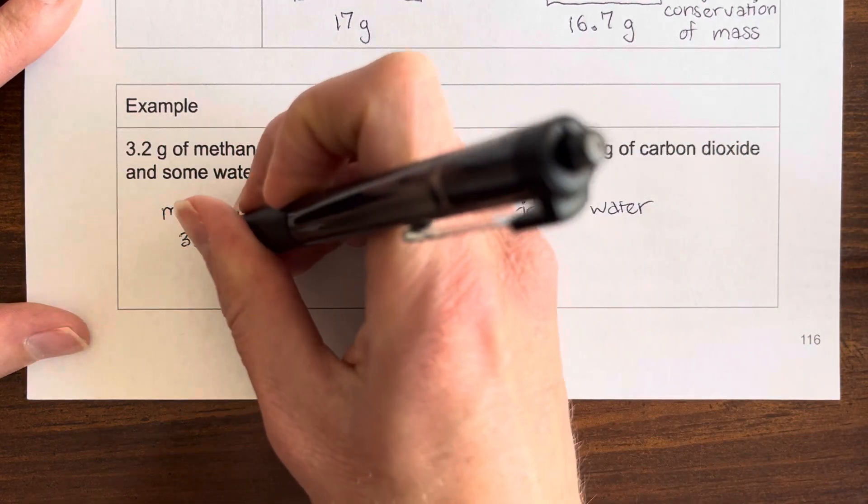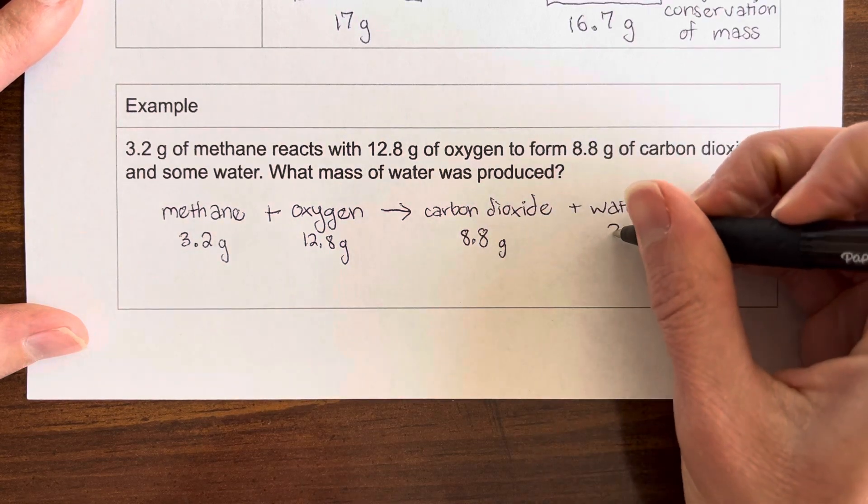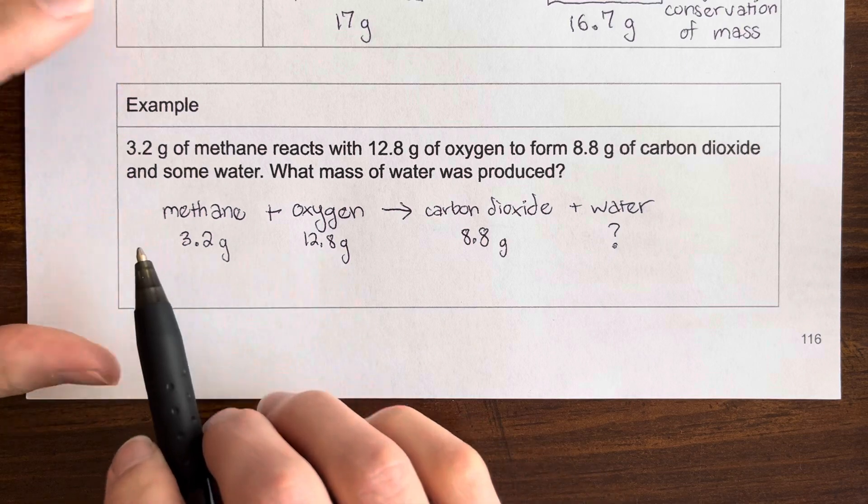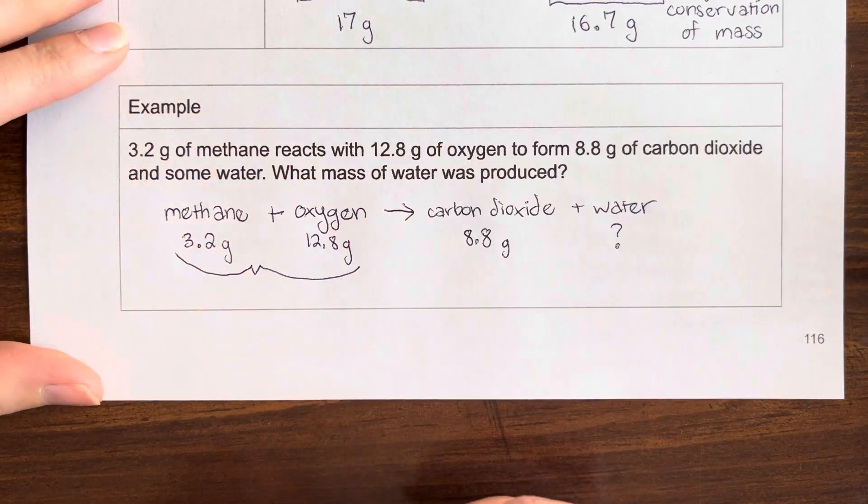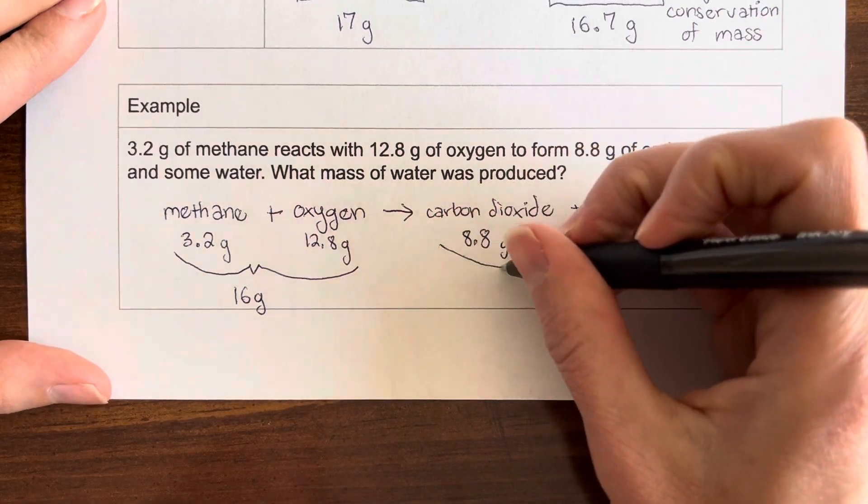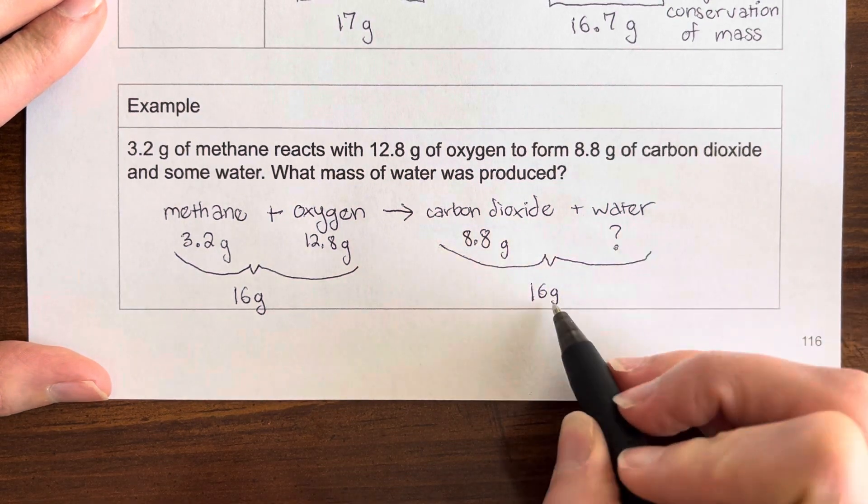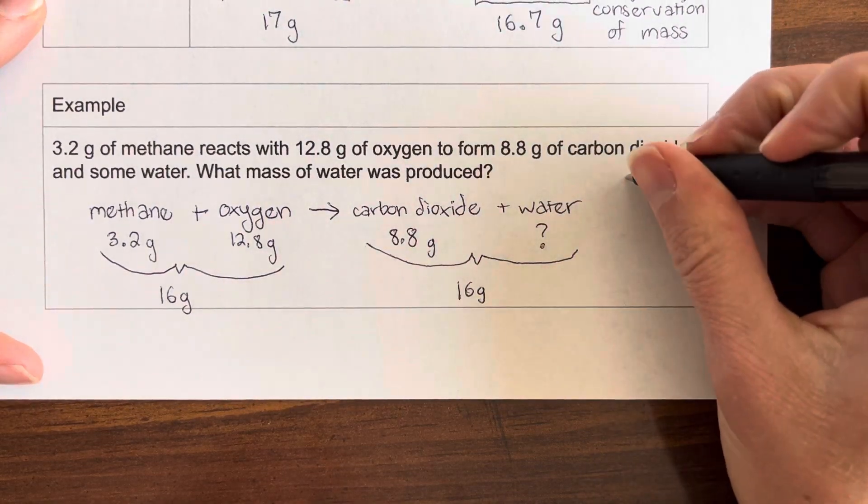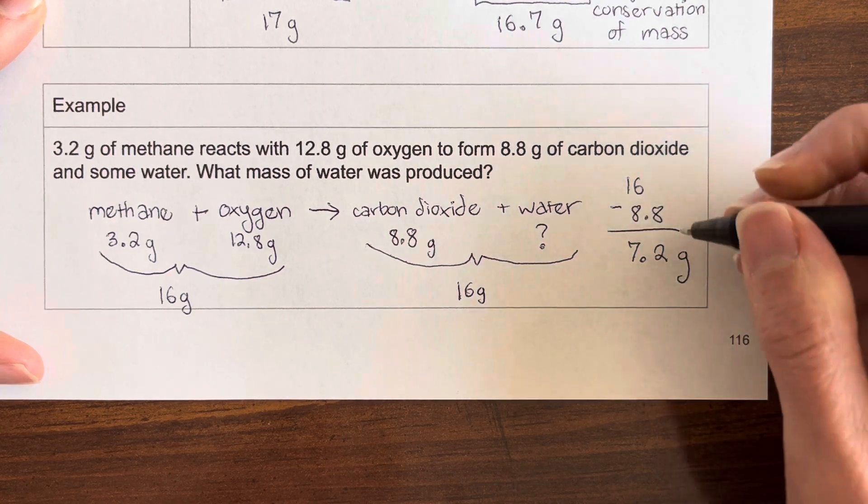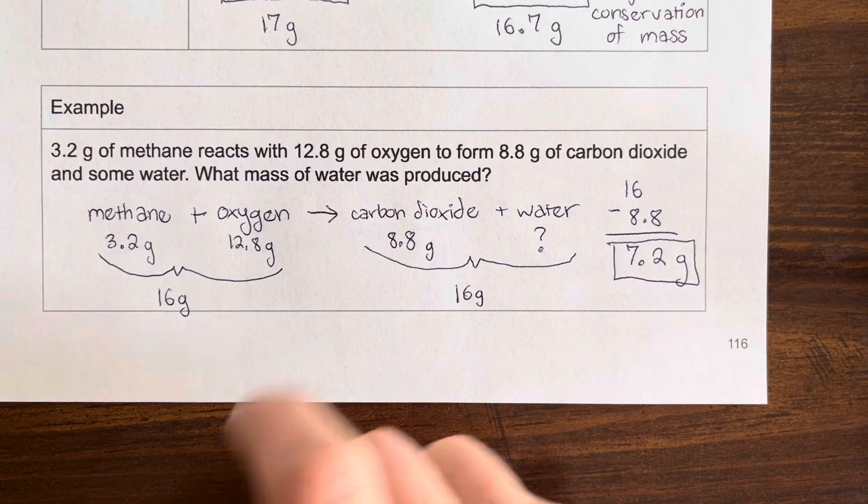The methane is 3.2, the oxygen is 12.8, the carbon dioxide is 8.8, and we do not know the mass of the water. So we can use the idea of the law of conservation of mass here because the methane and the oxygen are our only reactants. So if we add those two masses together, we're going to get the total mass of all of the reactants which ends up being 16. Now according to the law of conservation of mass, the mass of the products also has to add up to 16. So basically 8.8 plus whatever the mass of the water is has to equal 16. So to find the mass of the water, all we need to do is do 16 minus 8.8, which would give us 7.2 grams for the mass of the water. So that's how we can use the idea of the law of conservation of mass to solve problems like this.